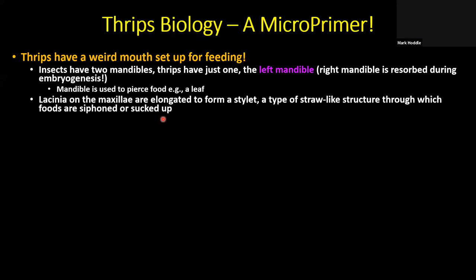Thrips biology — a microprimer. Thrips have really unusual mouthparts. Most insects have two mandibles, but thrips just have one — the left mandible. They use it as a needle to pierce their food. For example, if feeding on a leaf, they'll use that left mandible to stab individual cells and then suck up the juice. The right mandible is resorbed during embryogenesis. The lacinia — modified parts of the maxillae — are elongated and form a stylet that acts as a straw through which fluids are siphoned up.